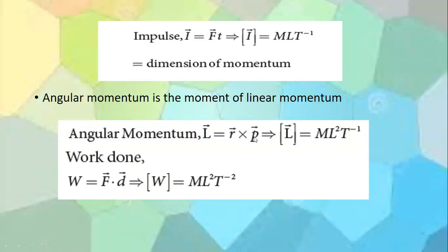Angular momentum is the moment of linear momentum, that is, linear momentum multiplied by distance. Linear momentum has dimension MLT⁻¹, and distance adds another L, giving ML²T⁻¹. Work is force multiplied by displacement, and force has dimension MLT⁻², and displacement is L, so work has dimension ML²T⁻².